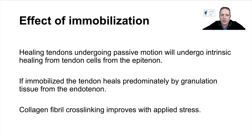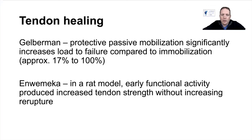If you mobilize it with passive motion, tendons undergo intrinsic healing from the tendon cells from the epitenon. But if immobilized, the tendon heals predominantly by granulation tissue from the endotenon. Collagen fibre crosslinks improve with applied stress — so the more stress you put through it, the more collagen fibre crosslinks occur — and that's why we've moved toward functional rehab.